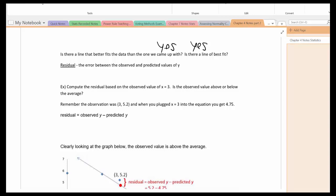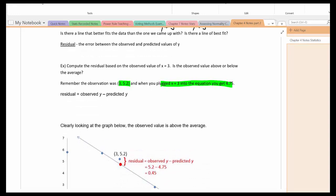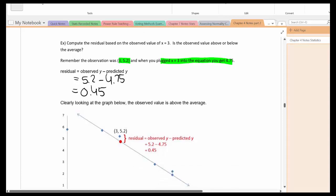This is the error between the observed and the predicted values for y. So let's compute the residual based on the observed value of x equal to 3. Remember the actual ordered pair or observed was 3 comma 5.2. And when we plugged in 3 into the equation that was 4.75. So our residual is the observed 5.2 minus the predicted 4.75. Subtract, and we get 0.45.